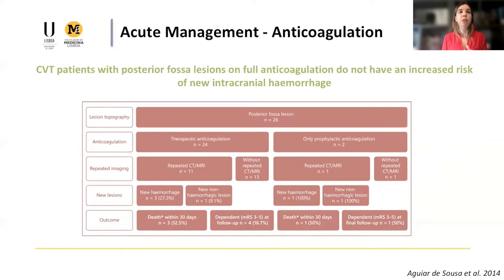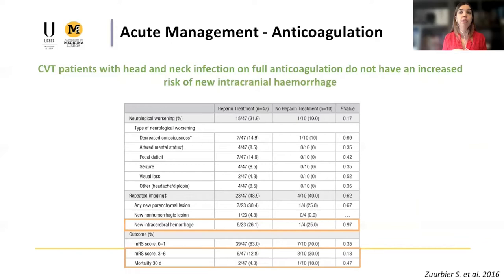There are some special situations in which there is increased concern about the risks of anticoagulation — for example, patients with posterior fossa lesions. The evidence is quite scarce and this is quite rare, but there is no evidence that we should proceed differently in such cases, as shown in this post-hoc analysis of the IS-CVT cohort. The same applies for patients with head and neck infection in association with CVT — there is also no increased risk of enlarged or new bleeding in patients treated with anticoagulation.